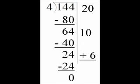We say, what number times 4 goes into 24? Well, it's 6. 6 times 4 is 24. And 24 minus 24 is 0.